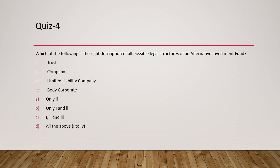Question 4: Which of the following is the correct description of all possible legal structures of an alternative investment fund? Alternative investment funds can only be created as a legal structure — as an individual you cannot start one, and even a partnership firm cannot start an AIF. The valid legal structures are: trust, company, limited liability company, and body corporate. So the answer is D — all of the above.